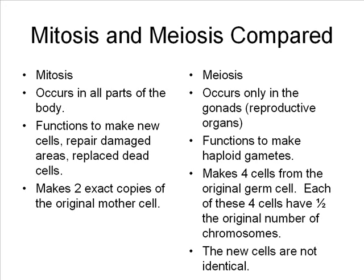Meiosis, on the other hand, functions to make haploid gametes or sex cells. Meiosis also functions to create genetic diversity in offspring. Mitosis takes one cell and makes two exact copies of the original mother cell. Meiosis takes one diploid cell and, after dividing two times, results in four haploid cells. Each of these cells has half the number of chromosomes of the original cell, and these cells are not genetically identical.